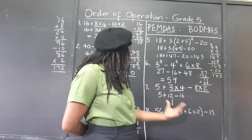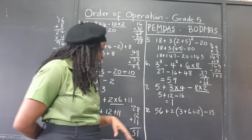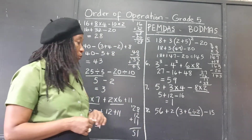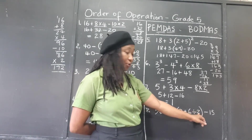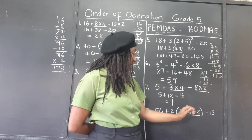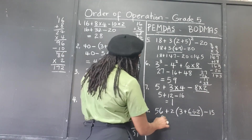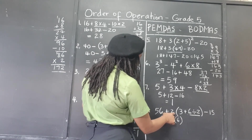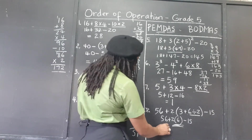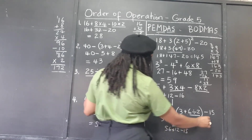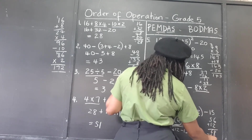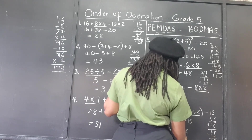Finally, we have a set of parentheses — brackets — that we need to work. Within the brackets, there's a division we must attend to first. We should not add the 3 and 6 to get 9 and then divide by 2. We do the division first: 6 divided by 2 is 3, then add to 3 to get 6. So it becomes 56 plus 2 times 6. We now take care of that multiplication: 2 times 6 is 12. So 56 plus 12 minus 15: 56 plus 12 is 68, minus 15 is 53. That is our final answer.